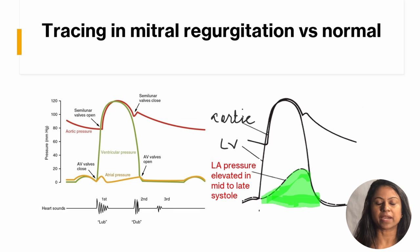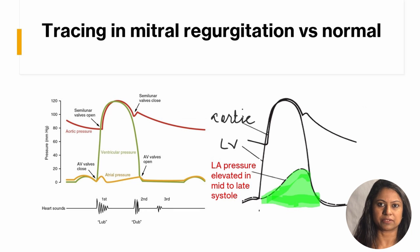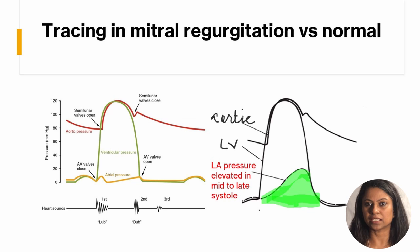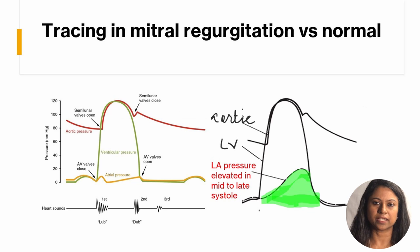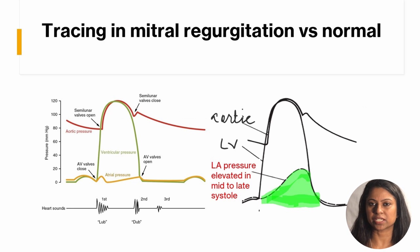In mitral insufficiency, or mitral regurg, blood flows back into the left atrium during left ventricular systole. If you look at the left atrial pressure tracing, you can see that the pressure stays near the baseline during diastole, but the left atrial pressure increases from mid to late systole.